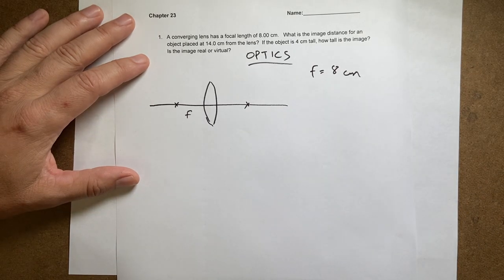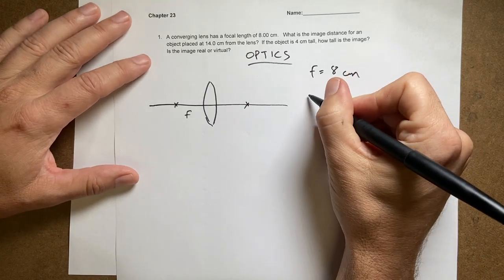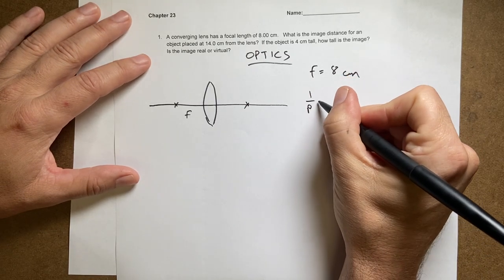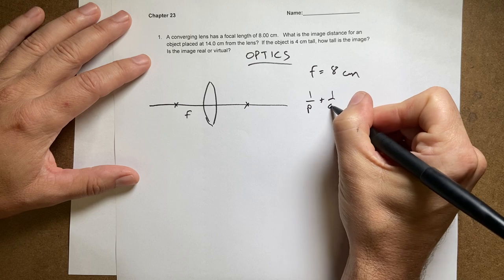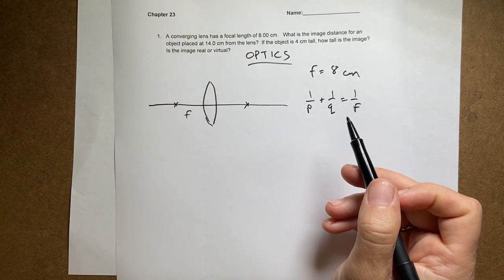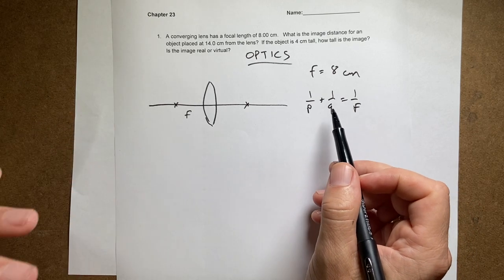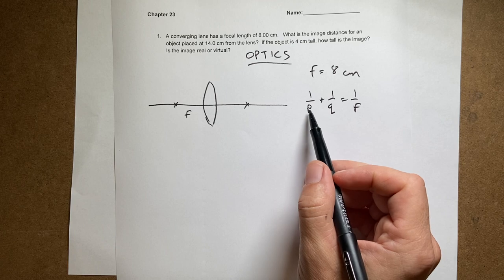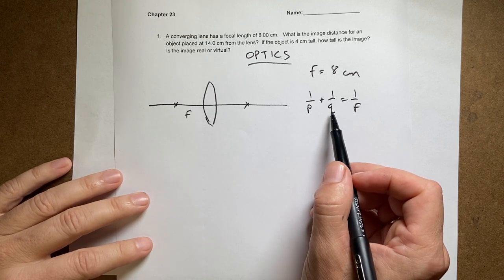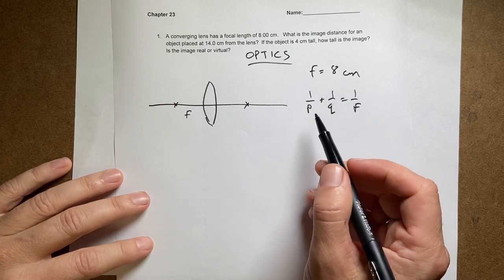to change the units because the equation we're going to use is 1/P + 1/Q = 1/F. I'm using some common notation—you could use I and O or P and Q. I'm going to use P for the object, Q for the image, and F for the focal length. As long as they're all in the same units, this equation works.